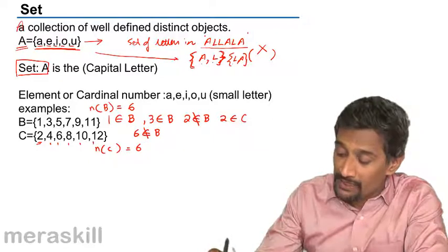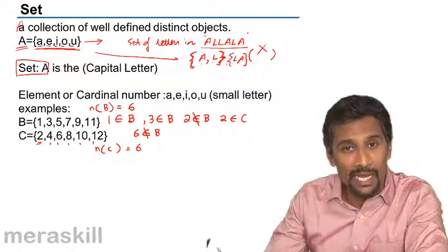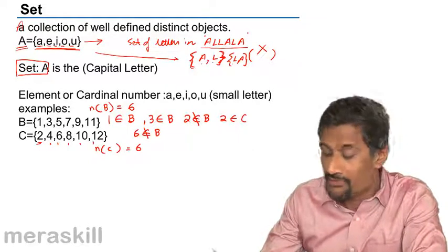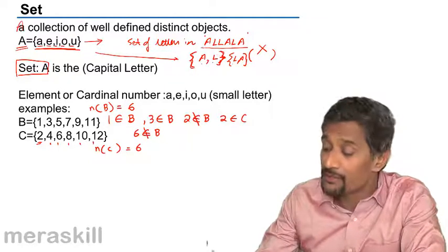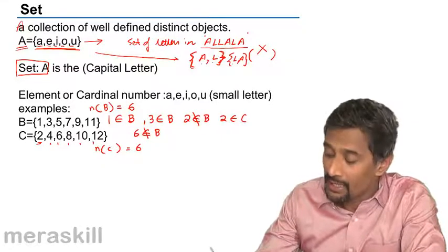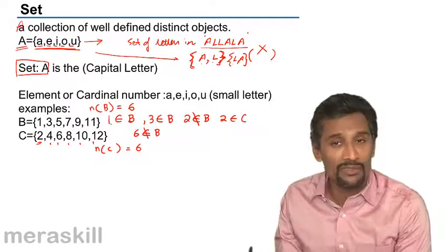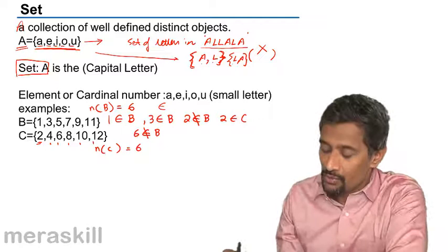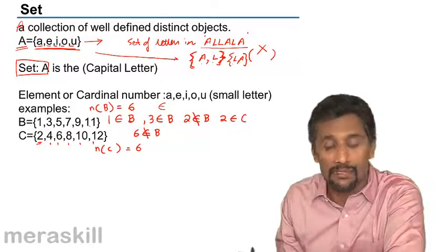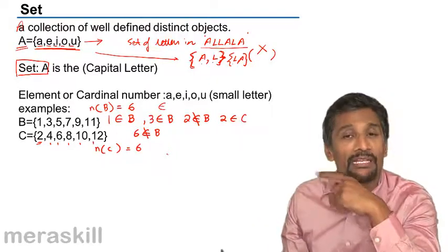We have to understand these rules. I repeat these rules: Whenever we write a set, we enclose all the elements of a set within brace brackets. The order of writing the elements, except in case of an ordered pair, is not important - you can write them in any order. Elements are never repeated in a set. Even if in the original list of elements they are repeated, when you enclose them within the brace bracket, you write them just once. And each of the members of a set is called an element of the set, given by the symbol epsilon. We say so-and-so is an element. And we also have a concept of cardinal number - the total number of elements in a particular set. We write it as n(B) = 6.